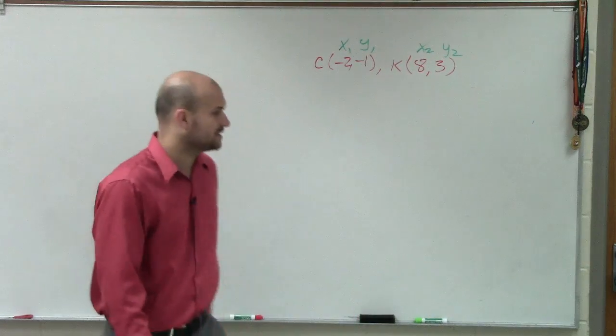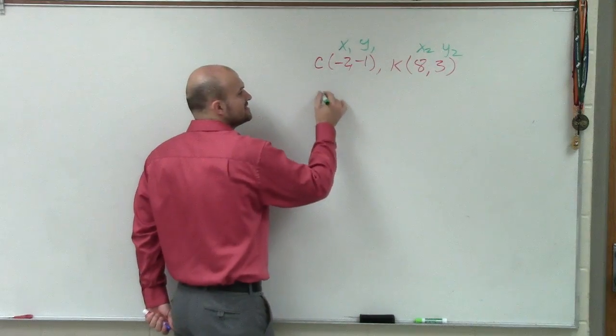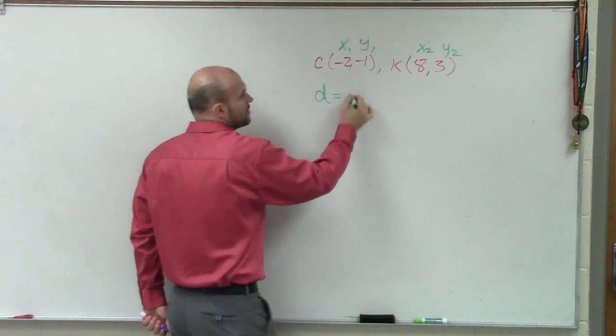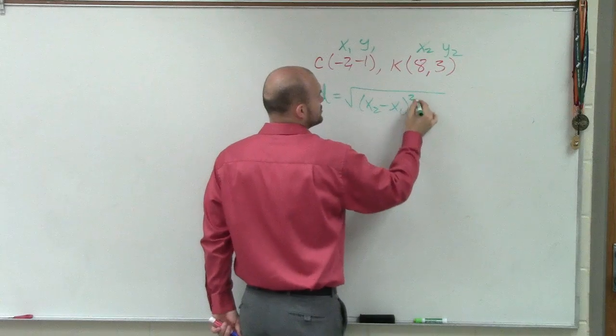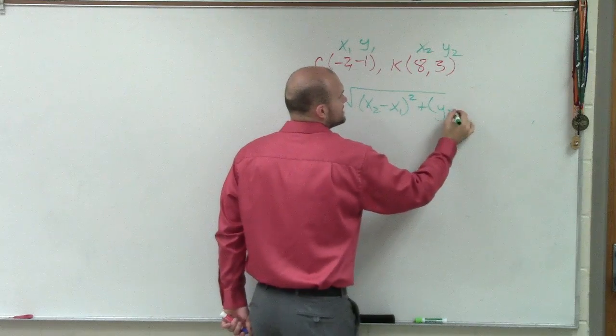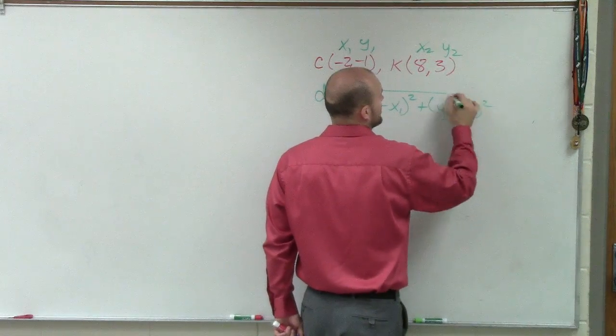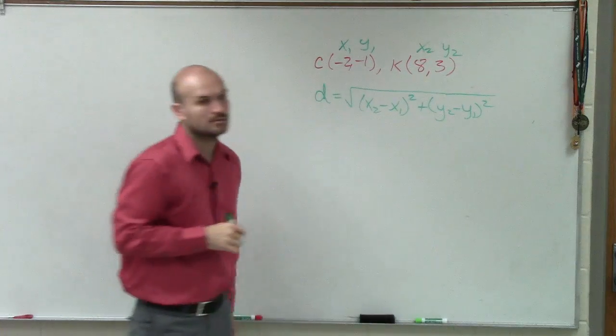The reason why we're going to label them is because if I'm asking you to find the distance, we talked about the distance formula is the square root of x2 minus x1 squared plus y2 minus y1 squared.